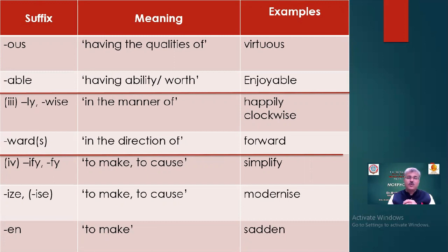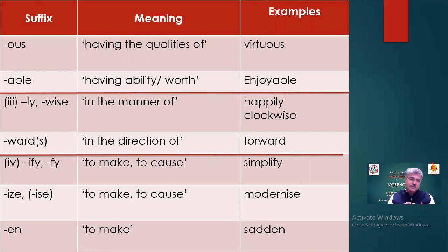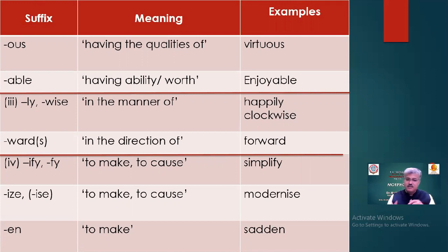Adverb forming suffixes: '-ly' or '-wise' means 'in the manner of' — e.g., happily, clockwise. '-ward'/'-wards' means 'in the direction of' — e.g., forward. Verb forming suffixes: '-ify' or '-fy' means 'to make, to cause' — e.g., simplify. '-ize' means 'to make or to cause' — e.g., modernize. '-en' means 'to make' — e.g., sadden.